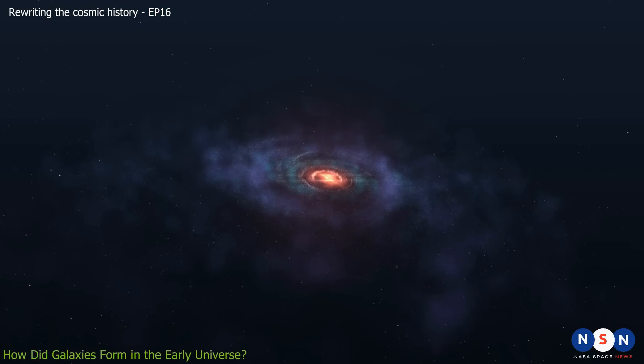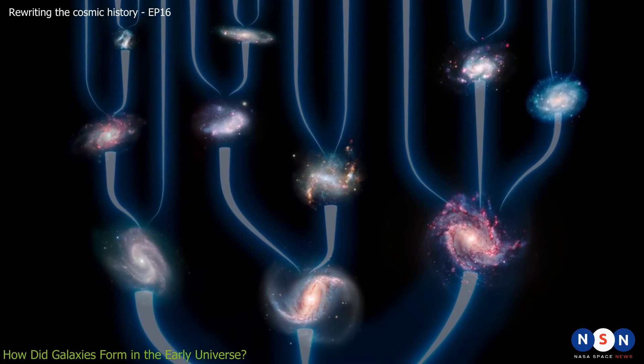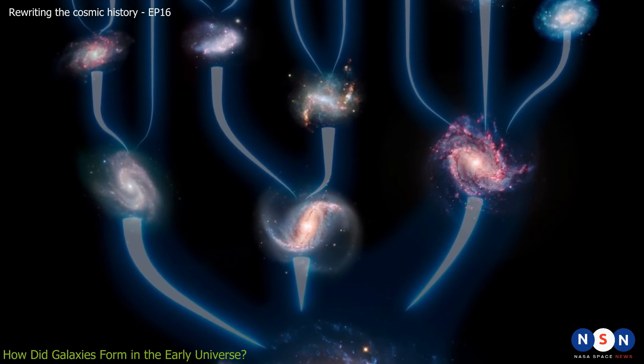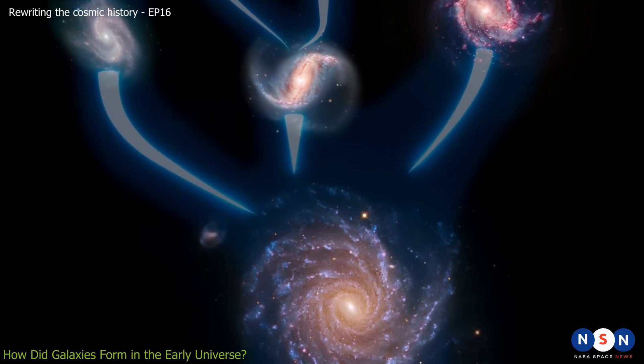The first galaxies were small, irregular, and clumpy, merging and growing over time. According to our current models, galaxy formation is a hierarchical process, meaning that smaller structures merge to form larger ones.